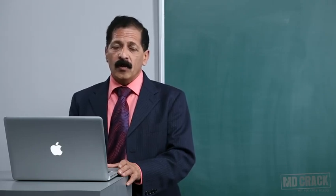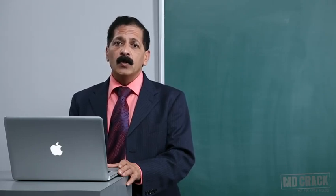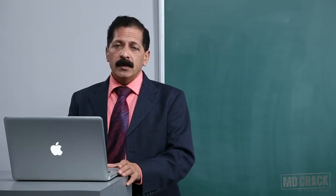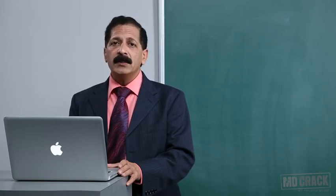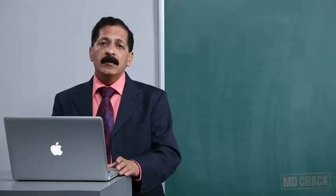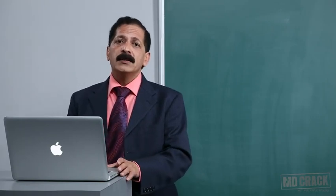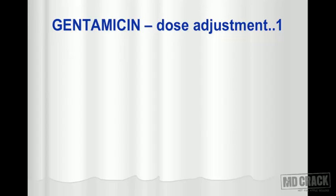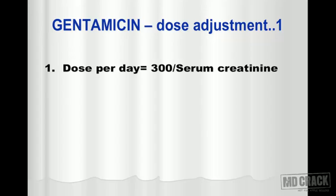There are various ways of adjusting the dose of gentamicin in such situations. When starting gentamicin, you find out what the renal function of the patient is, and based on this you can do the dose adjustments. This slide shows you the first method of dose adjustment. This first method relies on the serum creatinine levels.